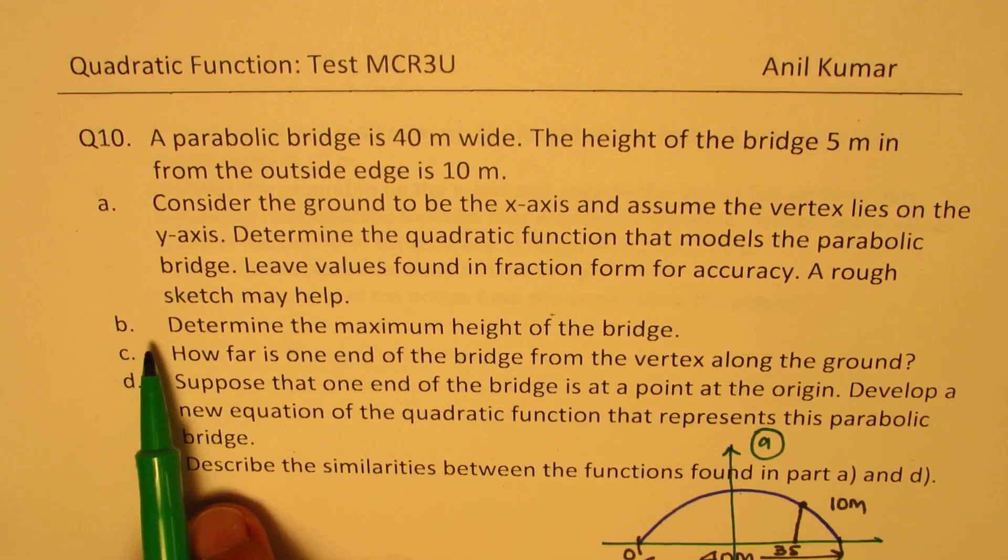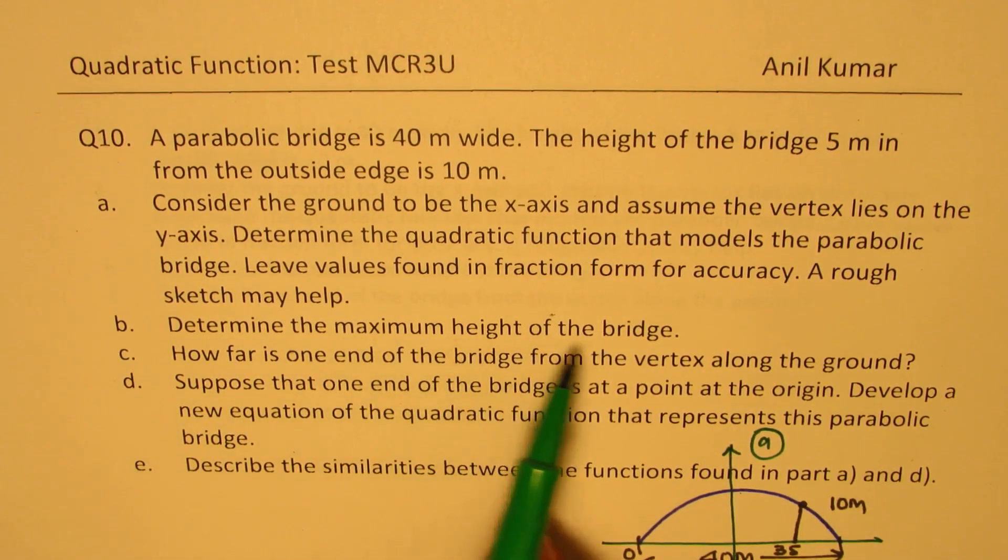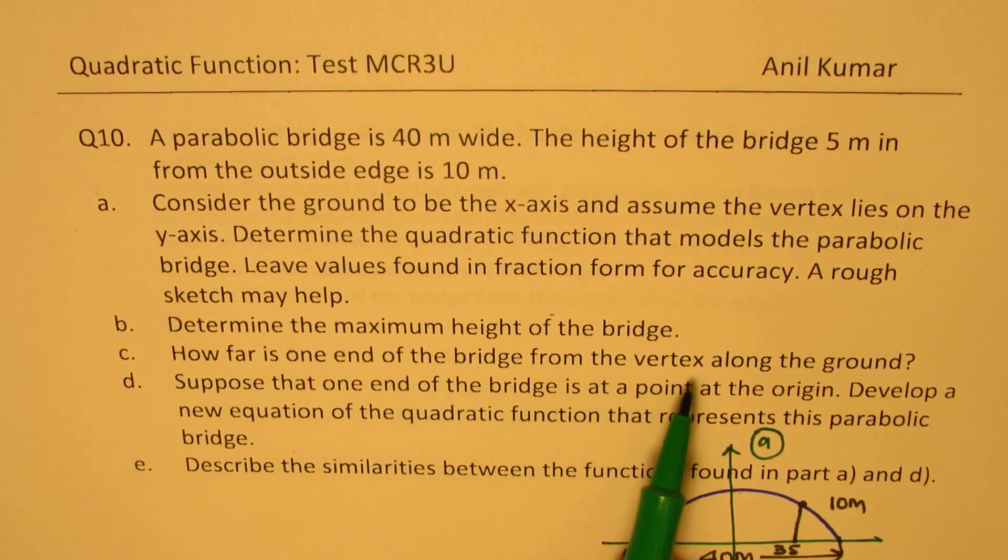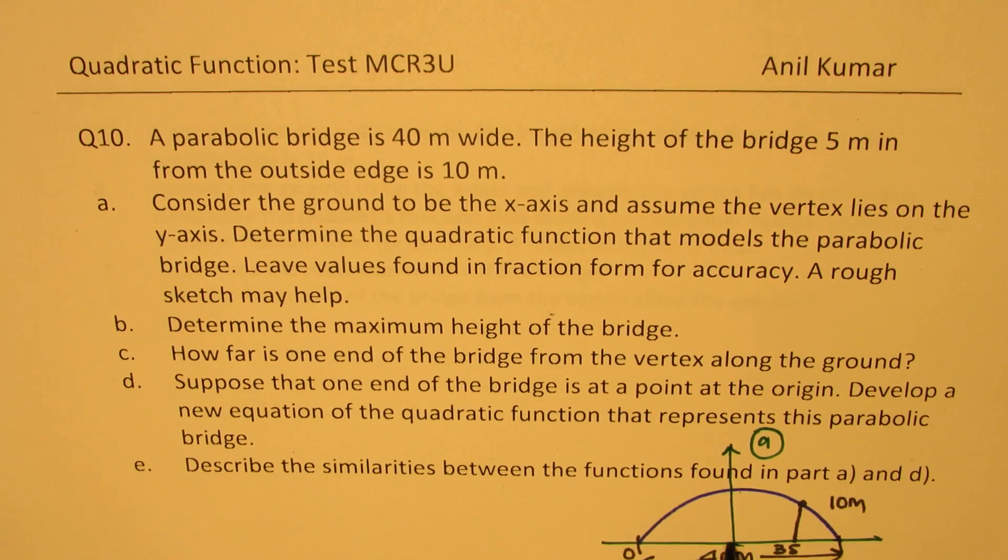Now in this part B is determine the maximum height of the bridge. C. How far is one end of the bridge from the vertex along the ground, right? This length. Well that is 20 meters as you can see.